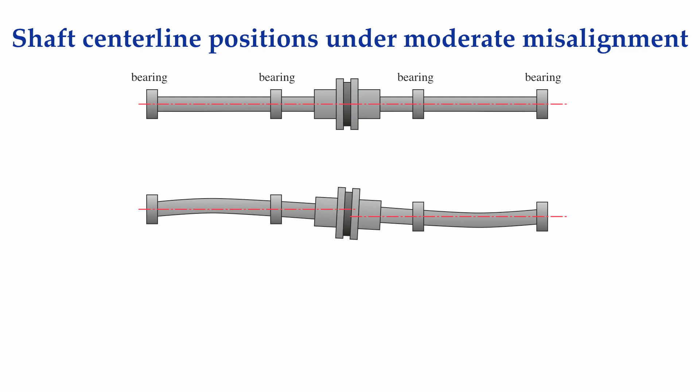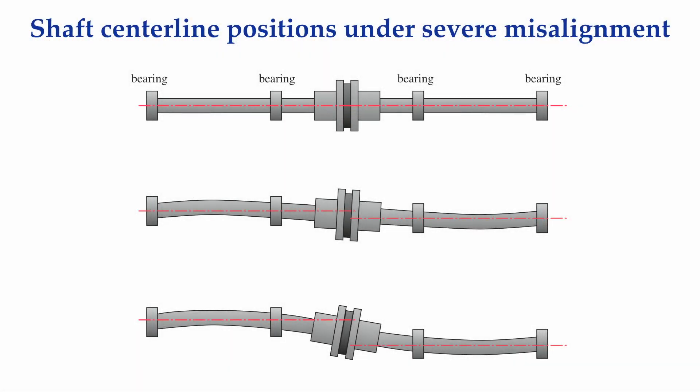When the misalignment begins to exceed the capability of the coupling, what happens is the shafts start elastically bending in an S-shaped curve. The greater the amount of misalignment between the shafts, the more exaggerated the S-shaped curve becomes. Be very careful not to misinterpret the illustration — the shafts are not permanently bent, they are just elastically bending. There is only a one-letter difference between the words 'bend' and 'bent,' but there is a huge difference in what those two words mean. Also be aware that elastically bending shafts do not produce an out-of-balance condition.